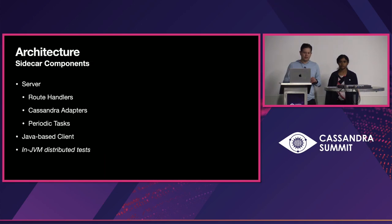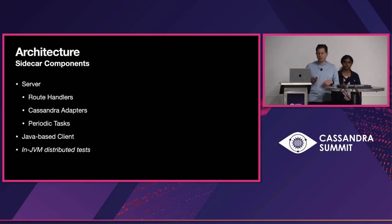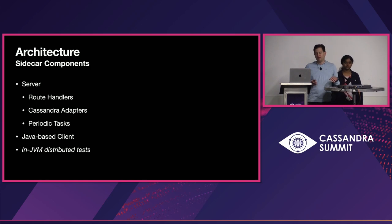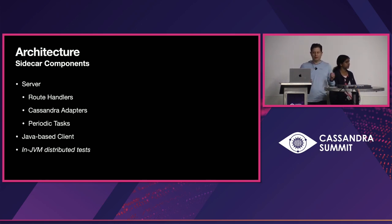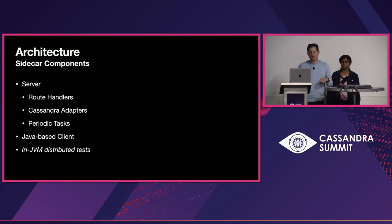Looking at the components in Sidecar, we have a server, a Java-based client, and we recently introduced NJVM distributed testing. In the server we have route handlers — when we get a REST request, we route those requests to the specific handler. We have adapters for different Cassandra versions and we have periodic tasks.